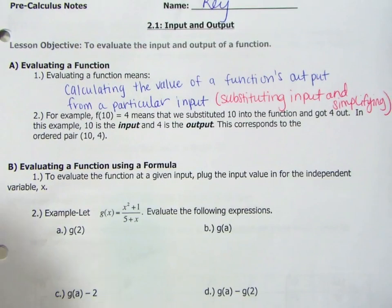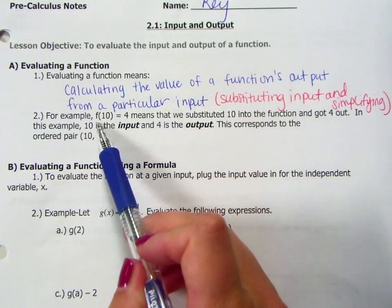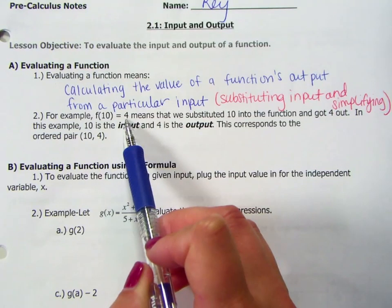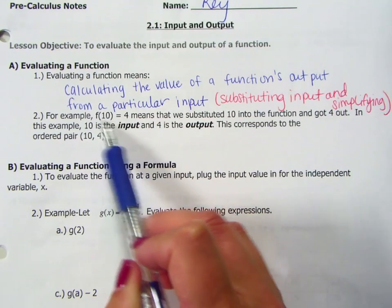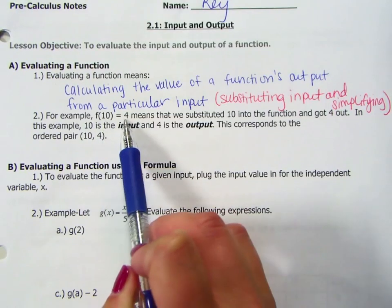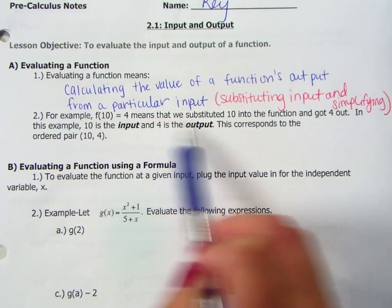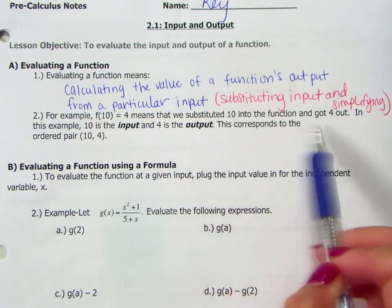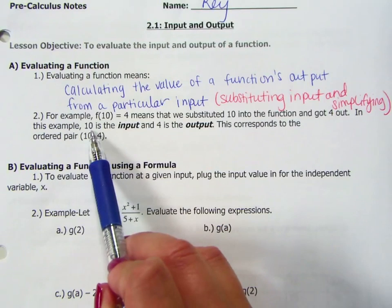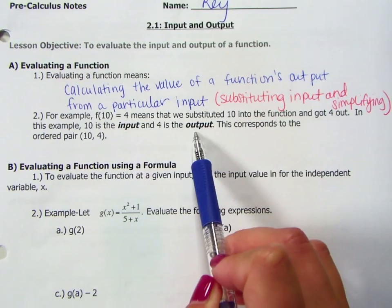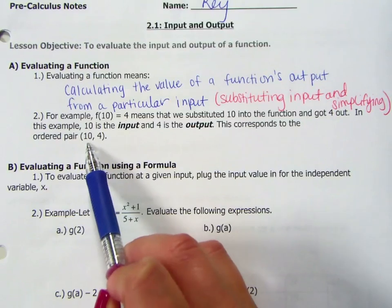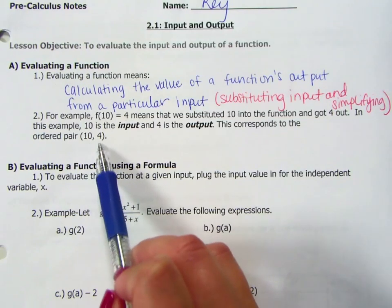The next statement says, for example, so this is using function notation. For example, f of 10 equals 4. So we talked last unit about this function notation. We should understand at this point that 10 is our input and 4 was our output. But what this means is that we substituted 10 into the function and got 4 out. So in this example, 10 is the input and 4 is the output. This corresponds to the ordered pair (10, 4). Think about x being your input, the y being your output.